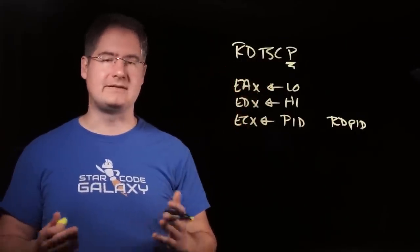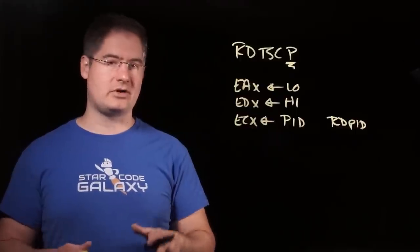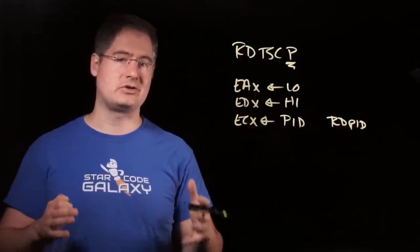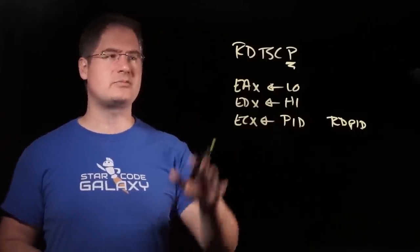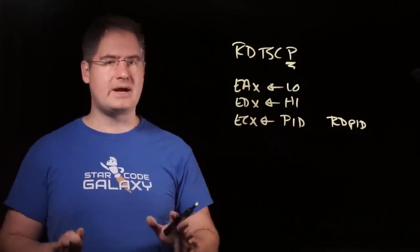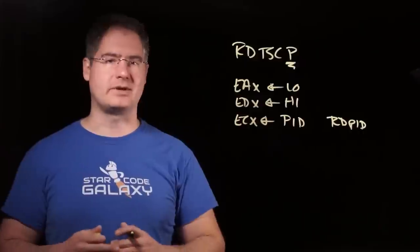Now, there's one other thing that RDTSCP does that we won't really talk about much here, but that's that it has some different characteristics with respect to the out-of-order execution of the processor. That's something we'll cover a little later in the course, so I'll just briefly mention that it exists here as a thing, but once we get to the out-of-order window, it will make more sense, so we'll explain it more there.